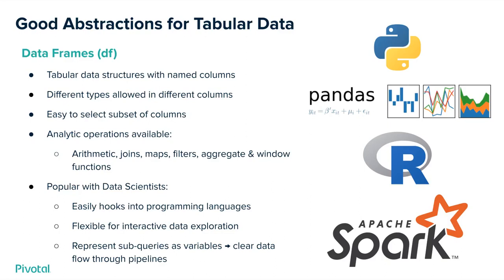Data frames, as I mentioned, is a tabular data structure that is very popular. Its popularity can be seen as a testament to the fact that many languages have independently evolved to have them, including Python with its pandas package, the R language, and Apache Spark — all of which have evolved data frames abstractions. It's easy to represent different kinds of data in different named columns, easy to select a subset of columns, there are a lot of analytical operations available, and it's popular with data scientists because it easily hooks into these programming languages. It's flexible for interactive data exploration and easy to represent steps in a processing pipeline as variables, giving you a clear flow of data through pipelines in an interactive way.